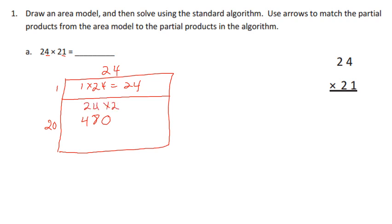Now I'm going to add them together. I have 24, 480, and I add them together we end up with 4, 10, carry 1, 504. Now the key here is now the standard algorithm. We start with the 1 and that's 1 times 24 equals 24. If you notice, it's the same thing as that standard algorithm right there in the area model.